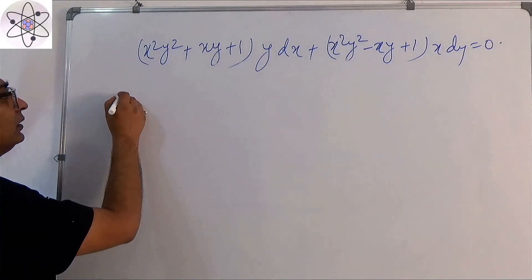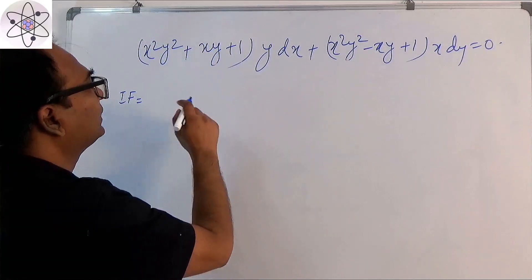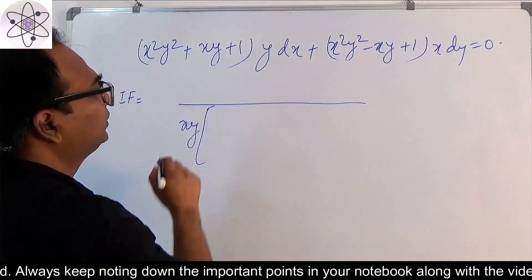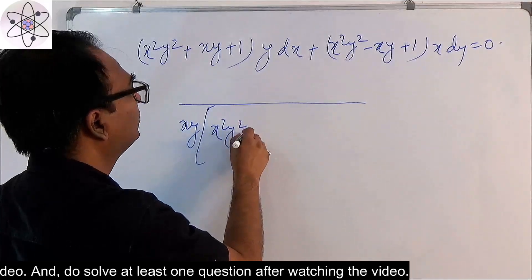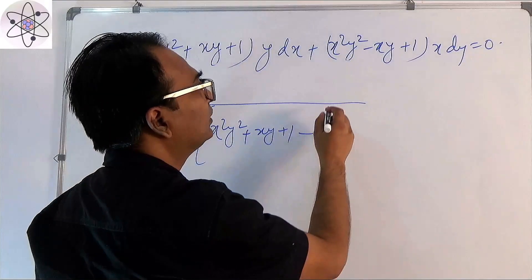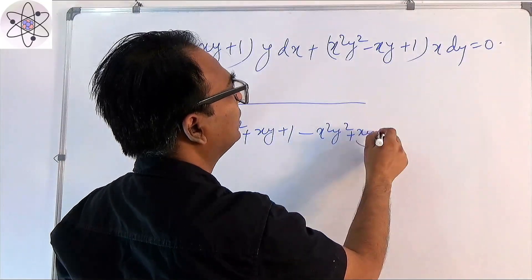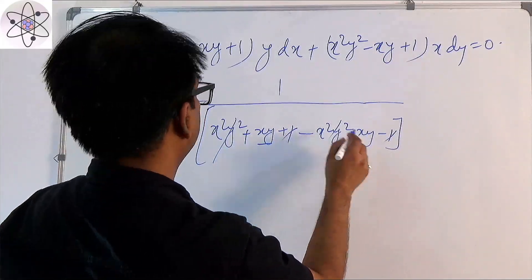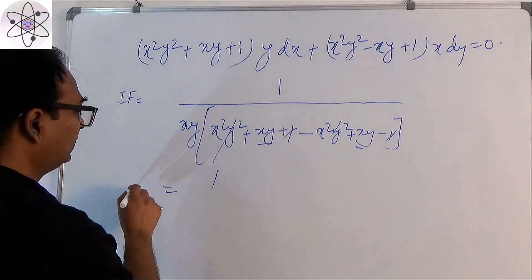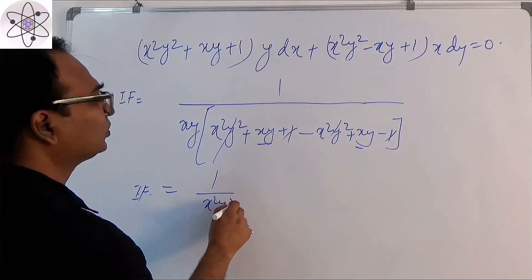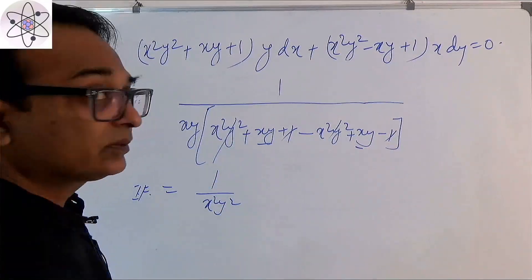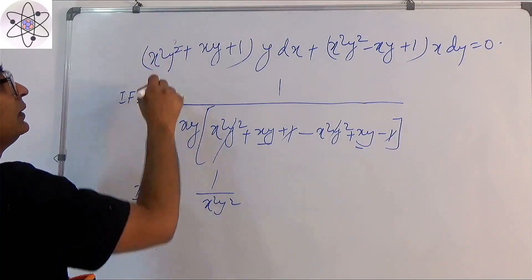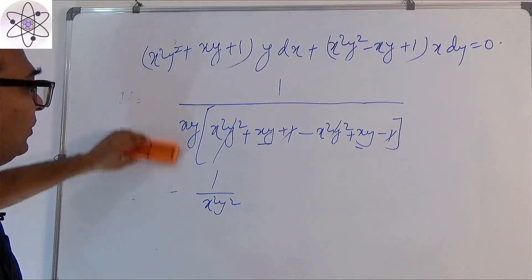Let's find the integrating factor. For M·x, we take xy out and similarly for N·y we take xy out. Computing M·x minus N·y: the x²y² terms cancel and the constant terms cancel, leaving 2xy plus xy. So 1 by (M·x minus N·y) simplifies, and our integrating factor is 1 by x²y².